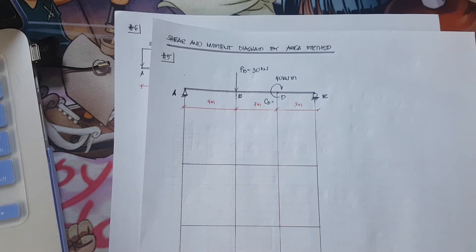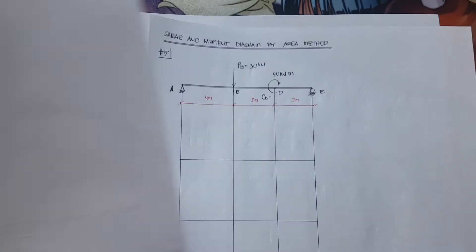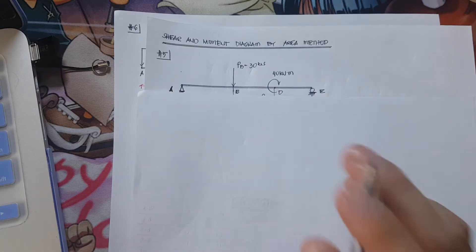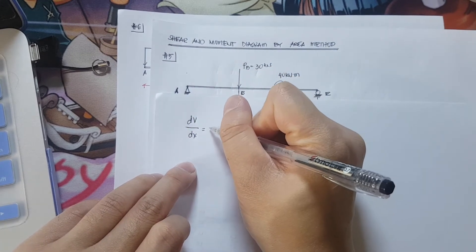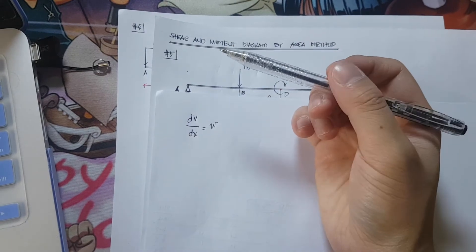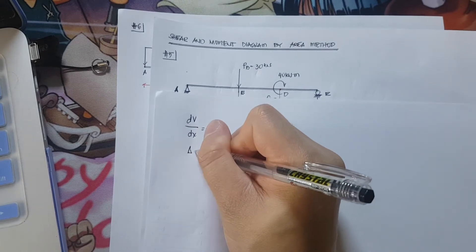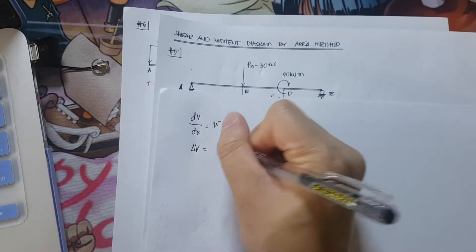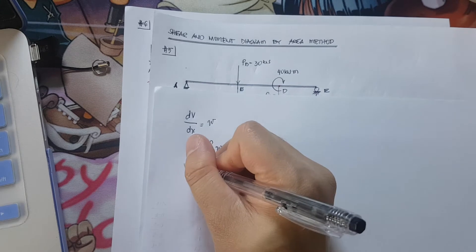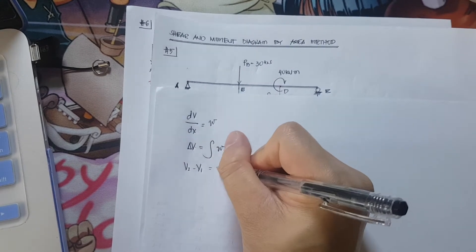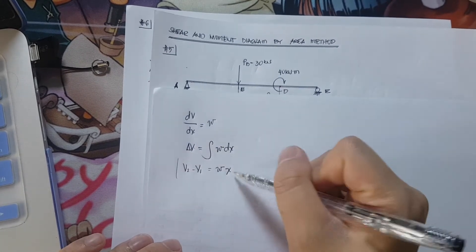This is no longer new to us because we're already using the equations. As a short recap: the derivative of shear with respect to x is equivalent to W. So the change in shear is equivalent to the integral of W dx, meaning shear 2 minus shear 1 is equivalent to W times x. We will be using this equation.